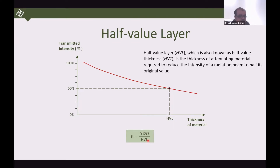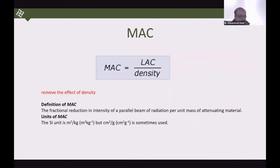This means that if a material has a very high attenuation ability, like lead, it will require very little thickness to attenuate the beam — even against the human body, very little thickness is needed, because of the linear attenuation coefficient.